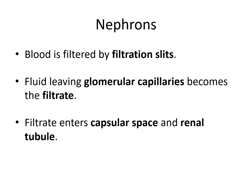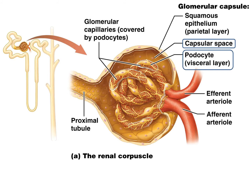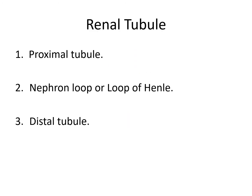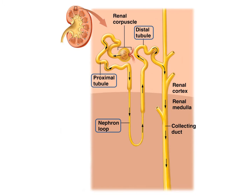Blood is filtered through the filtration slits. Once the fluid leaves the glomerular capillaries, we now call it the filtrate. The filtrate enters the capsular space and into the renal tubule. The renal tubule itself has three regions: a proximal tubule, the nephron loop or loop of Henle, and a distal tubule.